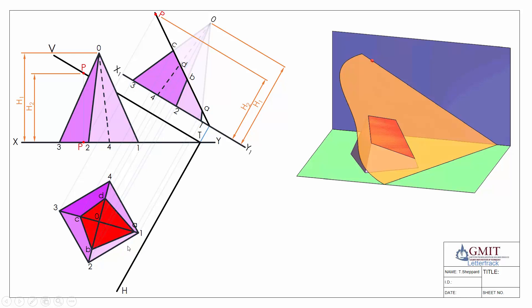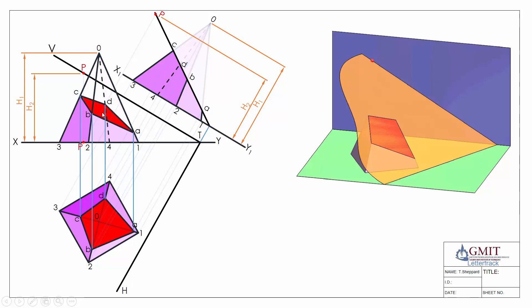Joining up a, b, c, and d gives us the completed plan view of the cut object, which we shade in. When drawing, keep lines light to start and then darken what you keep afterwards with an inking pen or heavier pencil. We then project the points up into our front elevation — point a is on line zero-one, so we project it up onto zero-one, and do the same with b, c, and d — joining them up to give the completed cut surface in elevation.